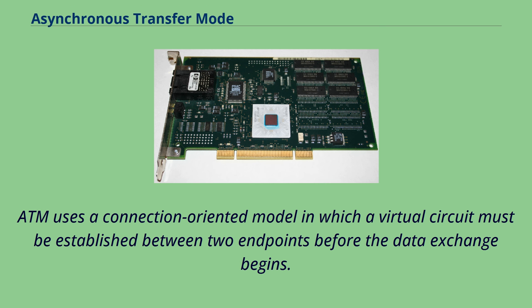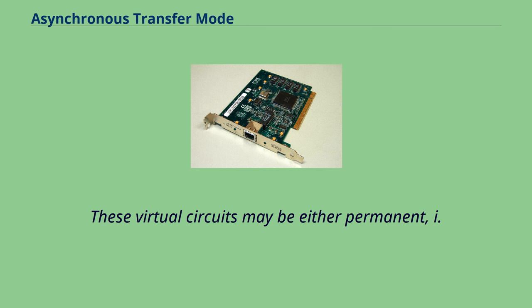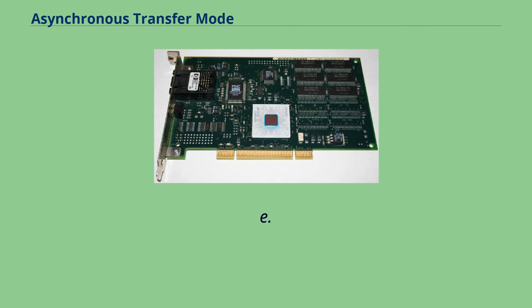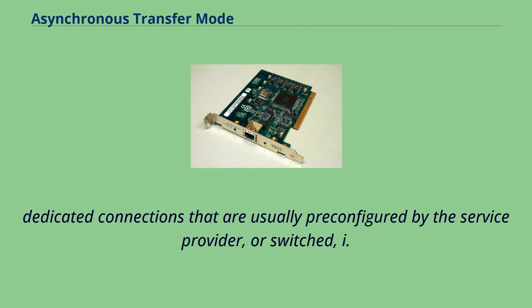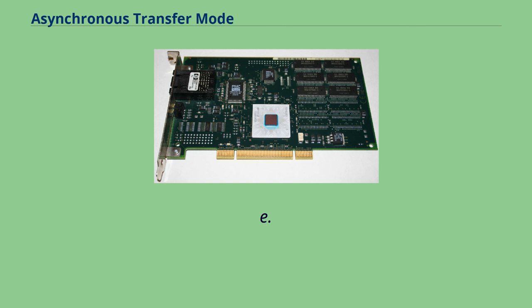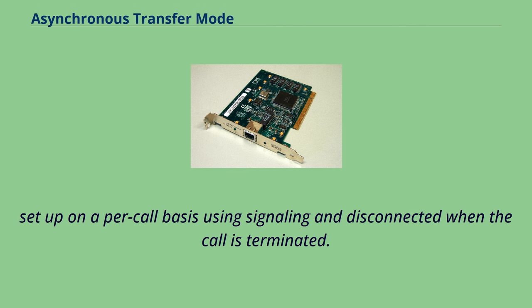ATM uses a connection-oriented model in which a virtual circuit must be established between two endpoints before the data exchange begins. These virtual circuits may be either permanent — i.e., dedicated connections that are usually pre-configured by the service provider — or switched, i.e., set up on a per-call basis using signaling and disconnected when the call is terminated.